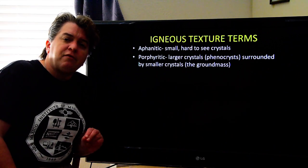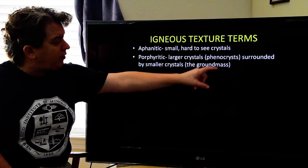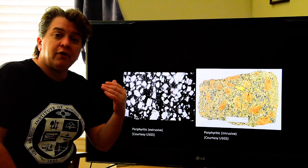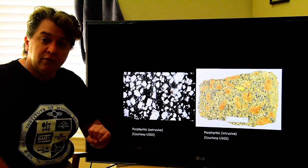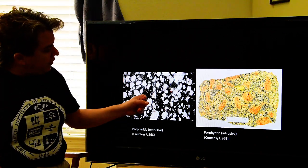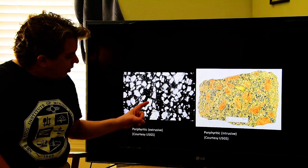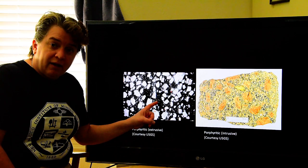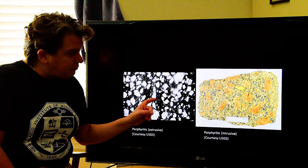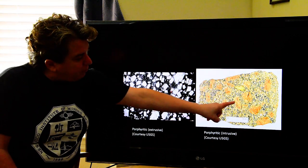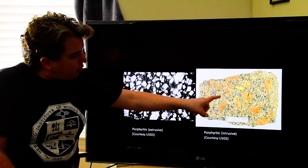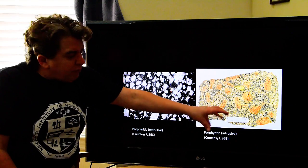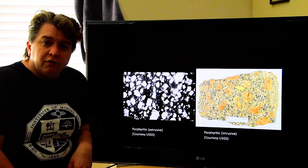You can also have a porphyritic texture, where you have two very distinctive sizes of crystals: bigger ones called phenocrysts surrounded by smaller ones called the groundmass. Porphyritic igneous rocks can form either on Earth's surface or underground — you tell the difference by looking at the groundmass. An extrusive porphyritic rock has big white crystals surrounded by tiny black ones you can barely see individually, while an intrusive porphyritic rock has larger crystals surrounded by smaller ones you can actually point out individually.